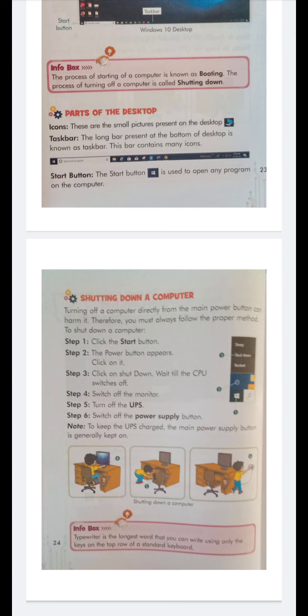Step three: click on Shut Down. Wait till the CPU is switched off. When the CPU is switched off, step four: switch off the monitor. Then after clicking Shut Down, you will switch off the monitor.